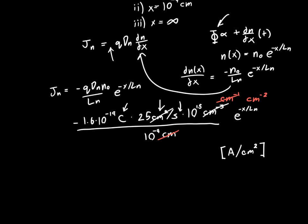And so if we evaluate it, if we plug in all these constants, we'll see that this is equal to minus 40 times e to the minus x over Ln amperes per centimeter squared. And so if we're interested in the equation at x equals 0, well, that's easy. That just becomes 1.